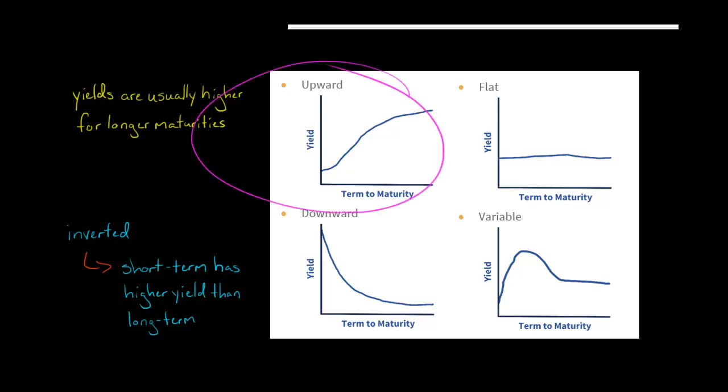But typically, you're going to have an upward sloping yield curve. Before a recession, you'd have a downward sloping yield curve. But it's always possible you could have some kind of weird shape that no one has ever seen before.